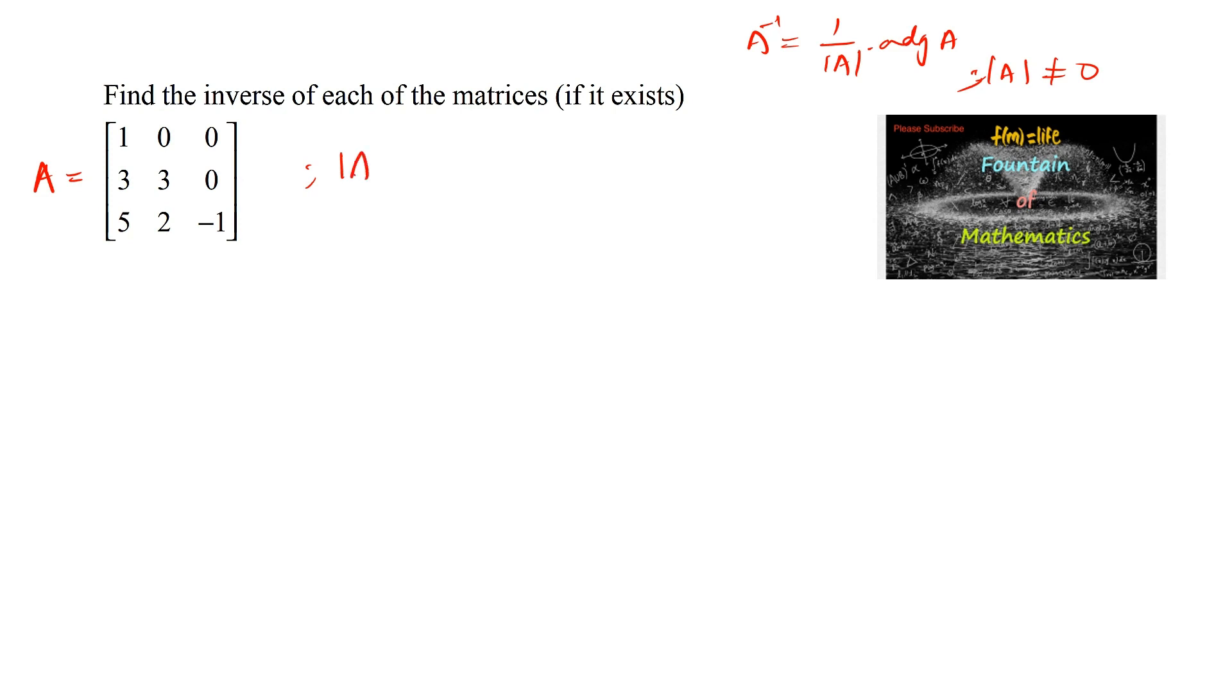Let's find the determinant of the matrix. The determinant of 1, 0, 0; 3, 3, 0; 5, 2, negative 1. We can see that in the first row there are two zeros.